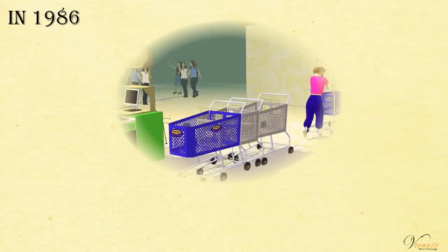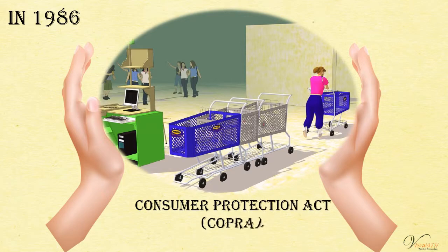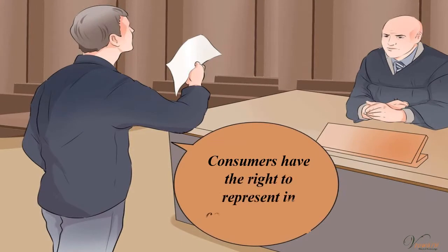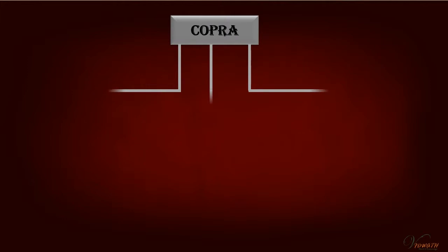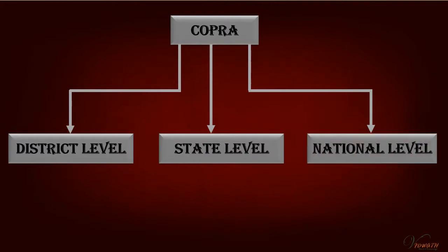In 1986, the government passed the Consumer Protection Act, COPRA, which ensures that consumers have the right to represent in consumer courts. COPRA establishes a three-tier structure: district level, state level, and national level, to strengthen the consumer movement and protect consumer rights.